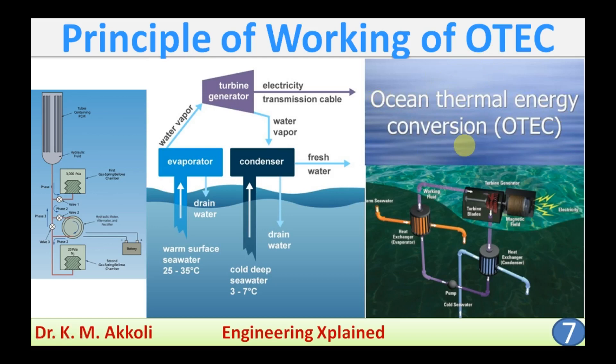Here it is an indirect conversion of solar energy. Whenever the solar rays fall on the ocean surface, it gets heated and stores heat energy. The ocean is a large trap of solar energy — it receives solar energy and behaves like a solar energy collector.